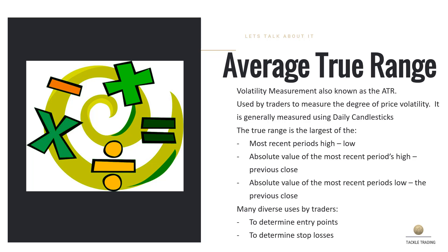It's used by traders to measure the degree of price volatility, generally on daily candlesticks. If you change your chart timeframe from daily to an intraday timeframe or even out to a weekly timeframe, the ATR will change because it's measured based on recent periods. The True Range is calculated by taking the most recent period's high minus the low, or the absolute value of the high minus the previous close, or the low minus the previous close — whichever is the biggest number out of the three — so that it compensates for gapping when measuring volatility.